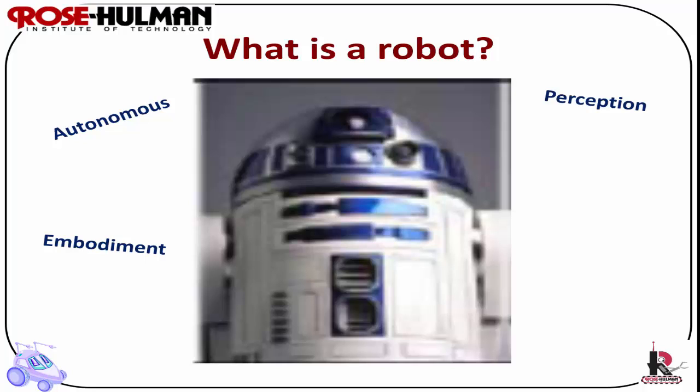A robot must have some way of sensing and understanding something about the world — for example, an infrared sensor telling the robot there's a wall or object nearby. A robot should also have some way of acting on or impacting the world, meaning it needs a gripper, manipulator, wheels, or something to act upon the world. And it should have a goal or a task — follow a wall, pick up a ball, fly to Mars — some type of goal or task.